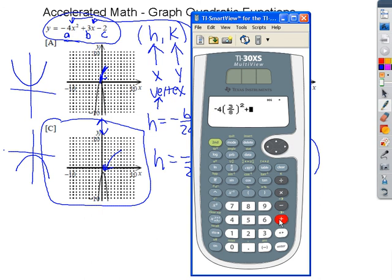Plus 3 times, again I'm going to do parentheses, 3 eighths. Close that parentheses. Then minus 2. Basically, I entered that entire function, but instead of an X in it, I put the 3 eighths that I was getting, and I hit enter.